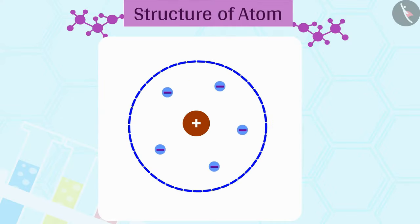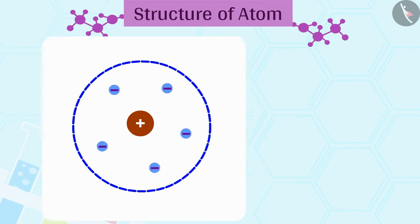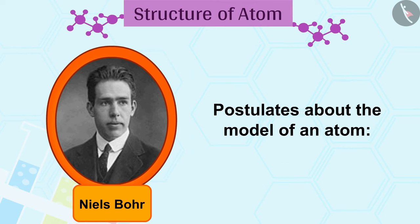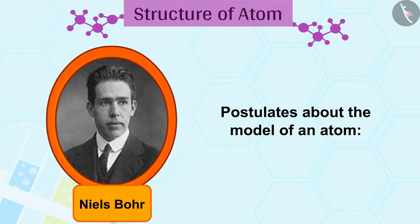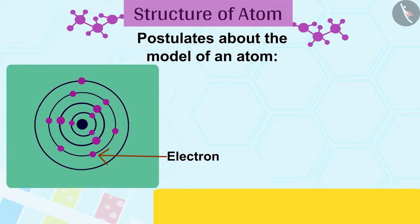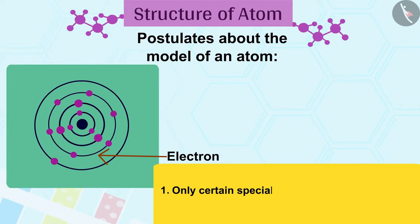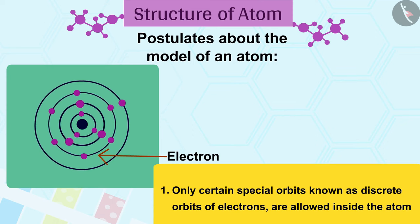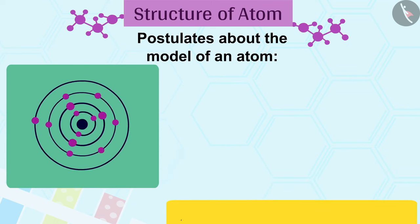In order to overcome the objections raised against Rutherford's model of the atom, Niels Bohr put forward the following postulates about the model of an atom. Only certain special orbits known as discrete orbits of electrons are allowed inside the atom. While revolving in discrete orbits, the electrons do not radiate energy.